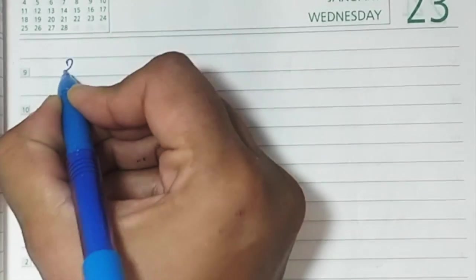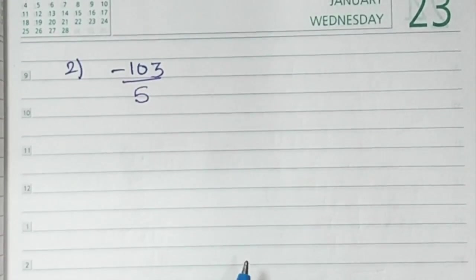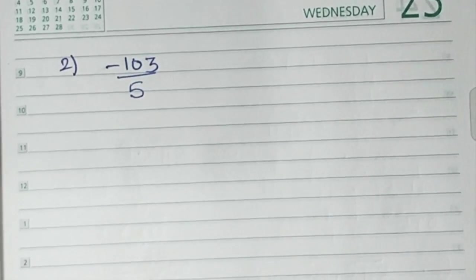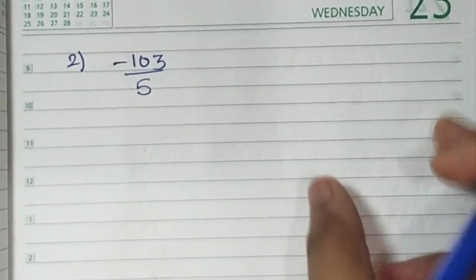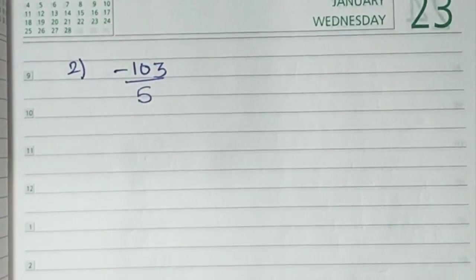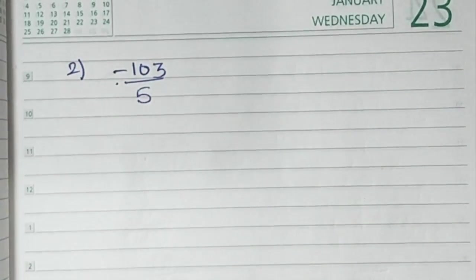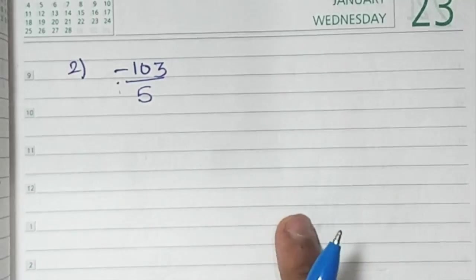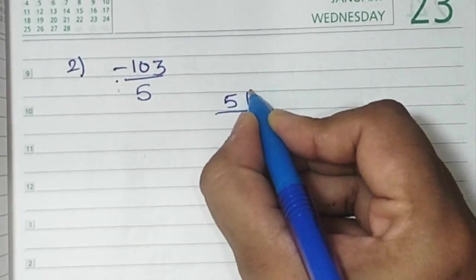Let's take another example of a rational number. Say, minus 103 upon 5. When you have to divide 103 by 5, you don't need to write the table here. Because 5 is an easy number, easy table. But here the problem is of a minus sign, negative sign. Remember, let that negative sign be there as it is. Don't bother to take it in the division. We will take it at the end when we write the answer. Let's divide first.